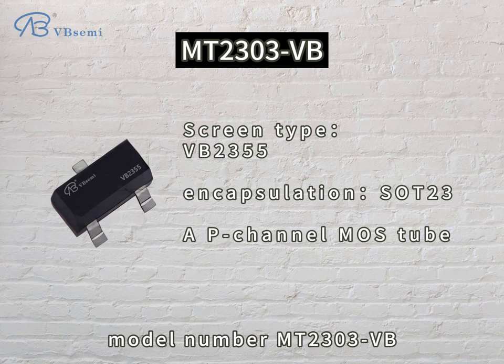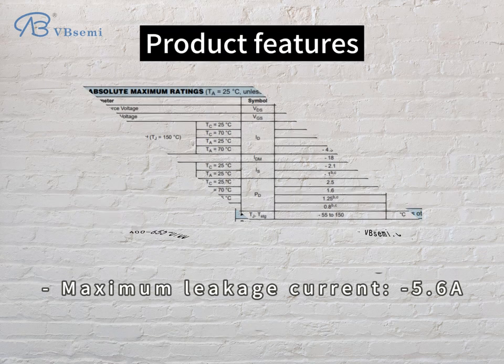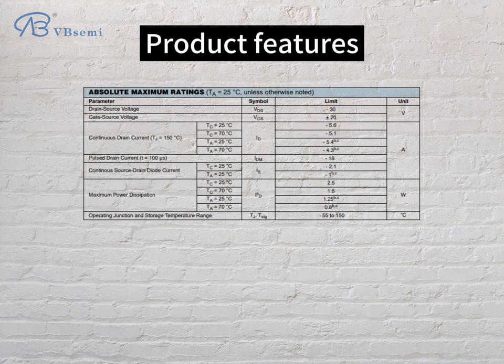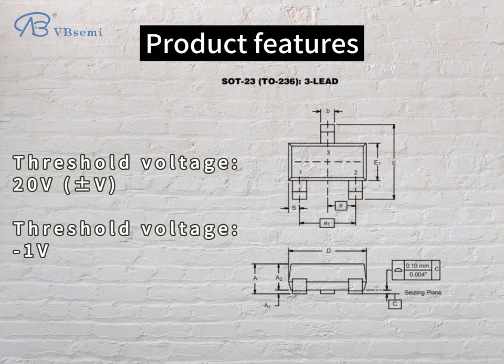Model number MT-2303VB. Product features: maximum withstand voltage of 30V, maximum leakage current 5.6A, threshold voltage range 0.1V to 20V.